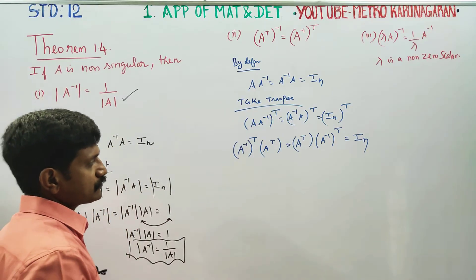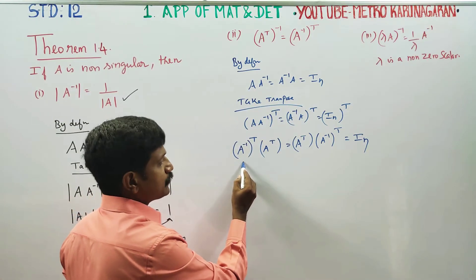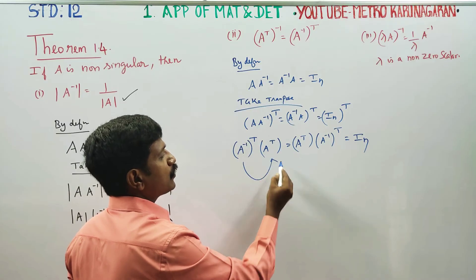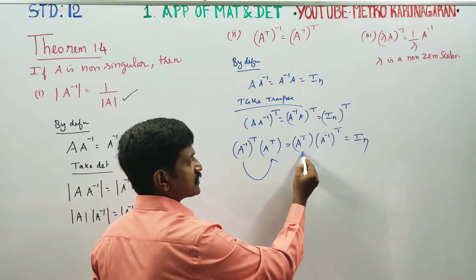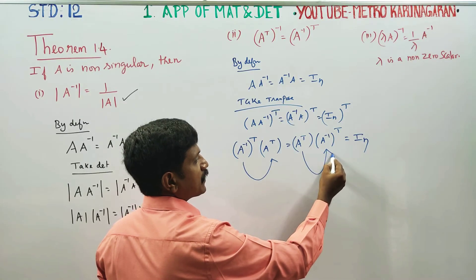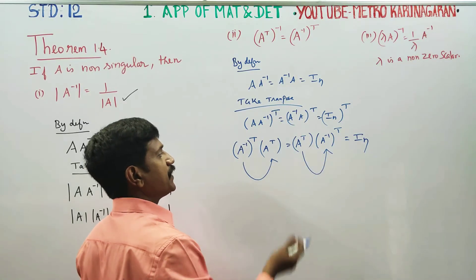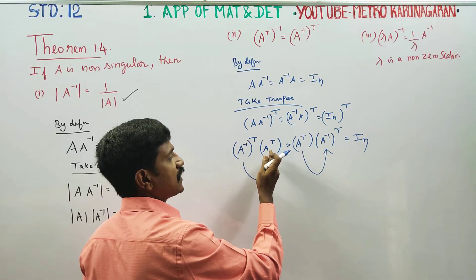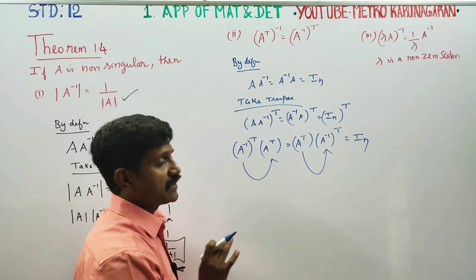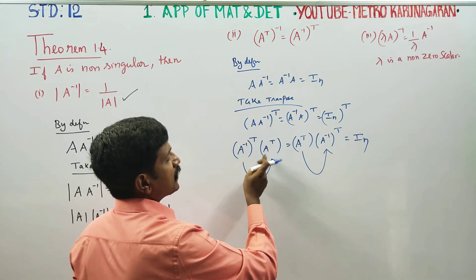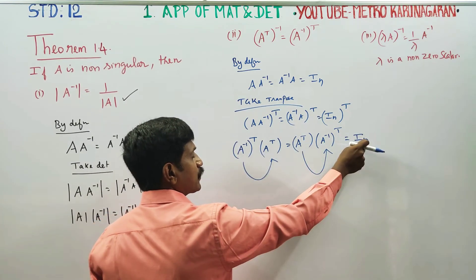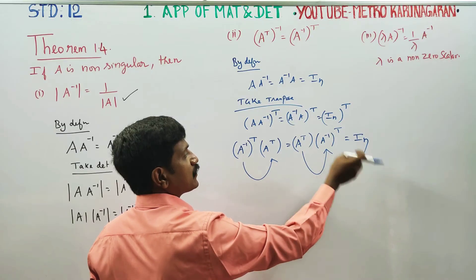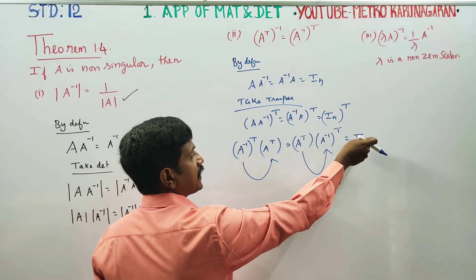The unit matrix transpose equals the unit matrix itself. By definition, if a matrix times its inverse equals I, then that matrix is the inverse.